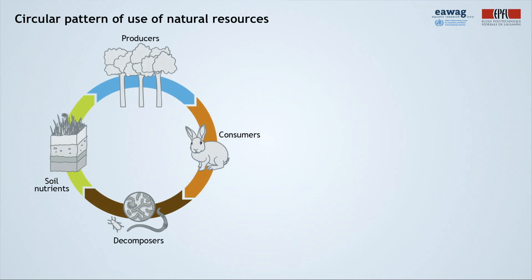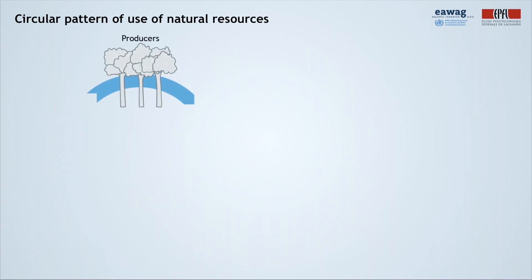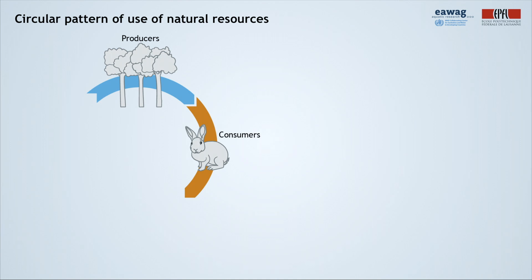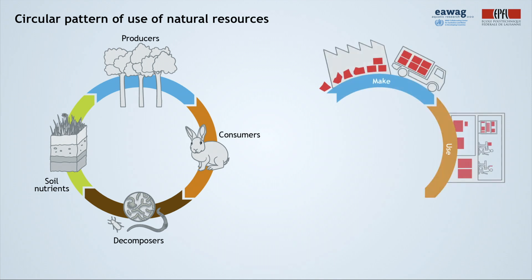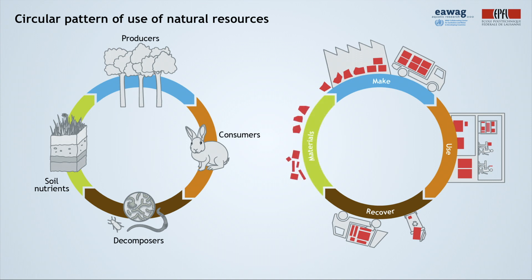But if we look at nature, at natural ecosystems, how they use natural resources around them, we see that nature functions in a circular pattern, starting from plants as producers, including several levels of consumers, and when they die, decomposers get to work to convert them into soil nutrients, which in turn serve as food for the producers again. A circular economy envisages a similar system, where after make and use stages, materials are recovered and processed into a new cycle of production and use.